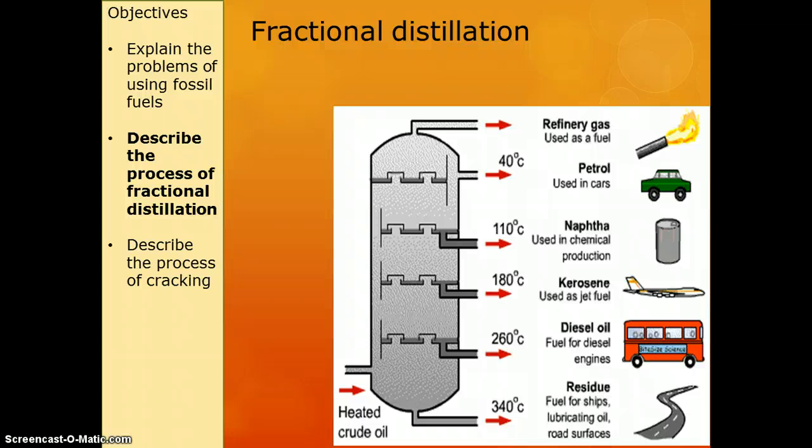Here is our fractionating column. As you can see, the crude oil goes in at the bottom and it's really hot at the bottom and cooler at the top. We call that a temperature gradient. As the gas goes up, it cools down and turns into a liquid and gets captured at the different levels, and then we pipe it off.